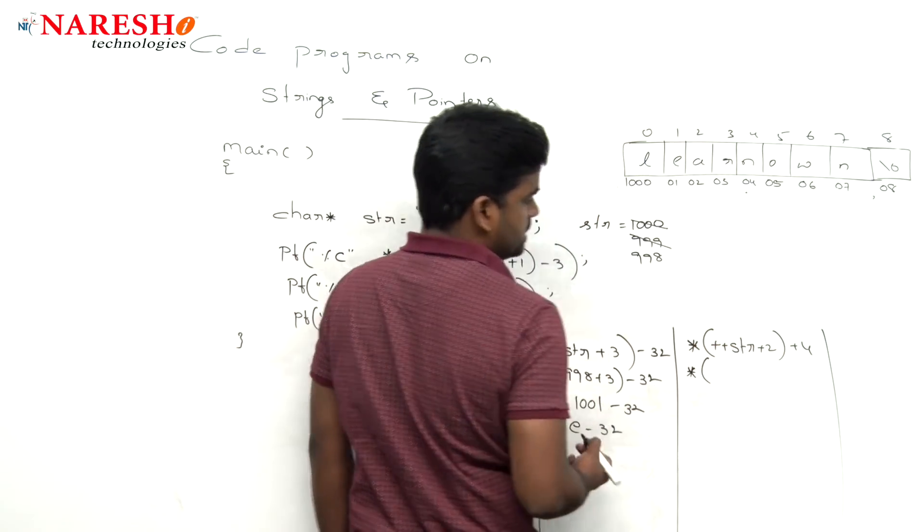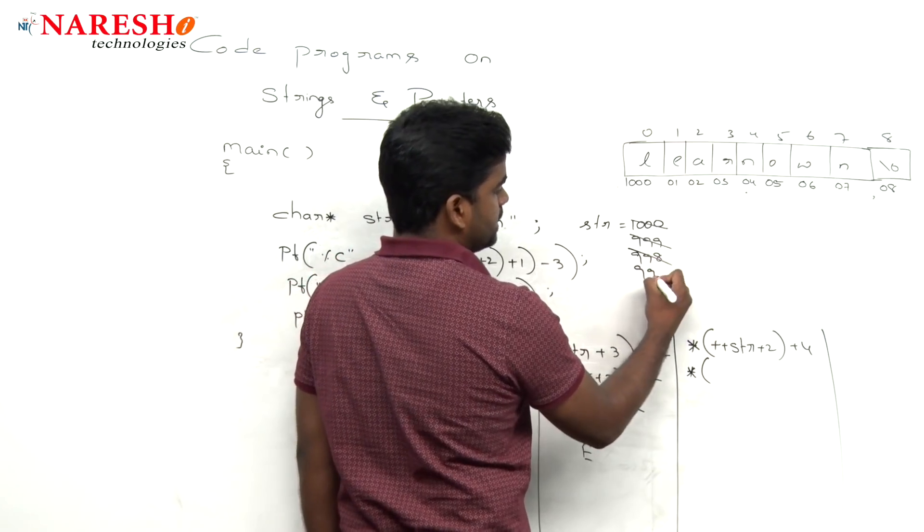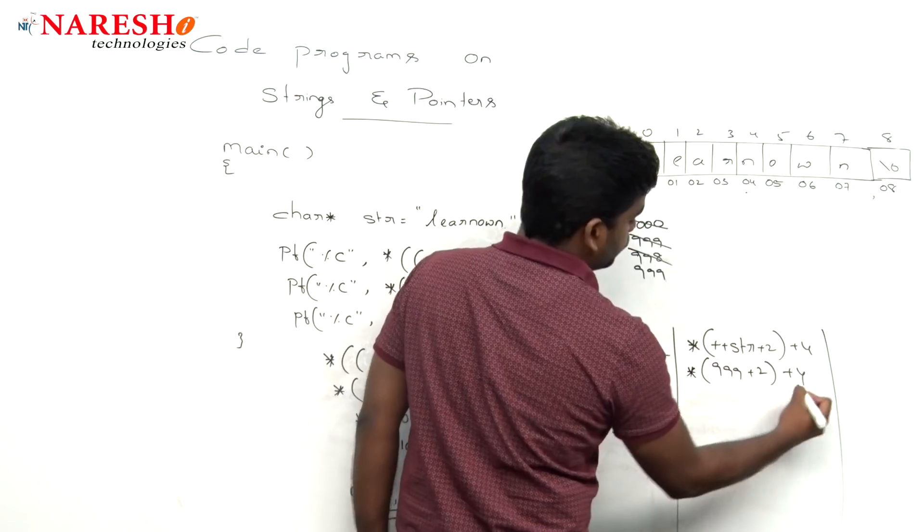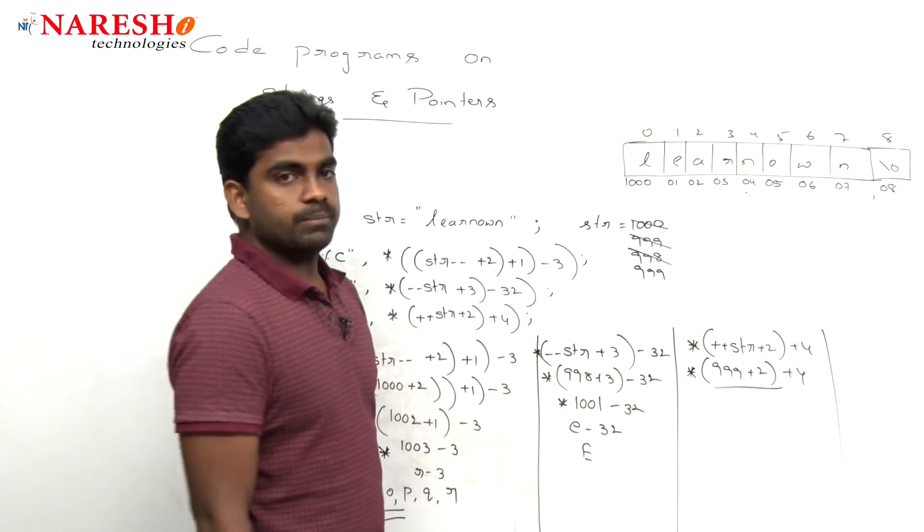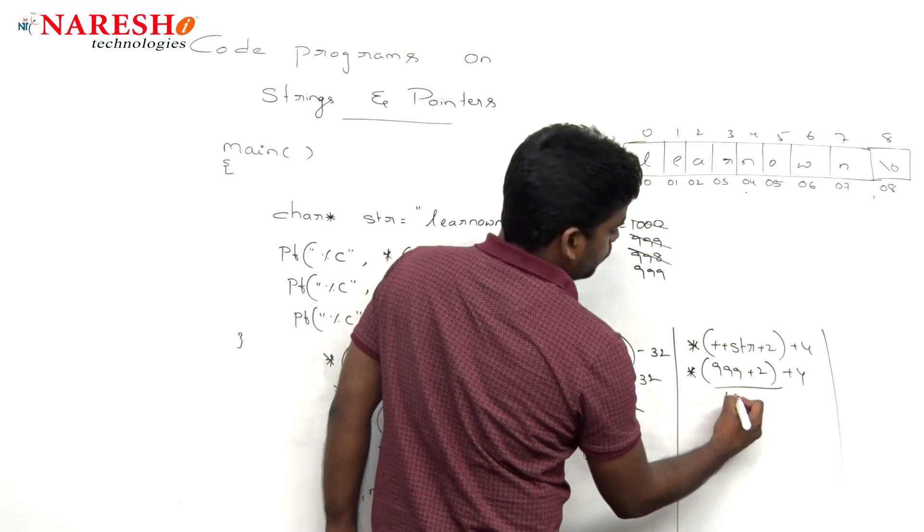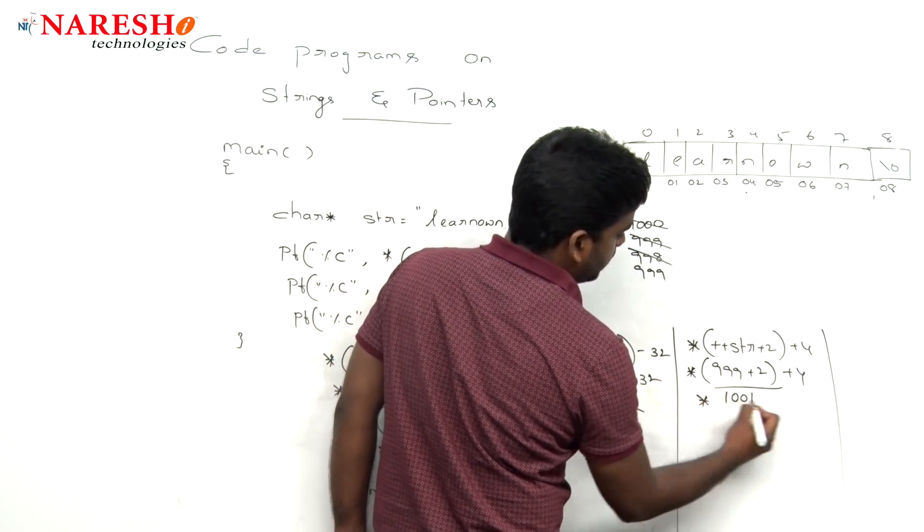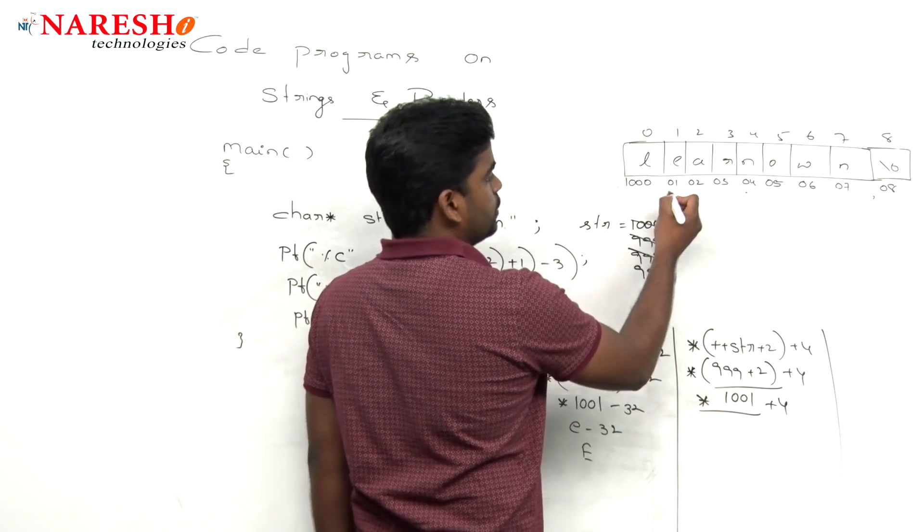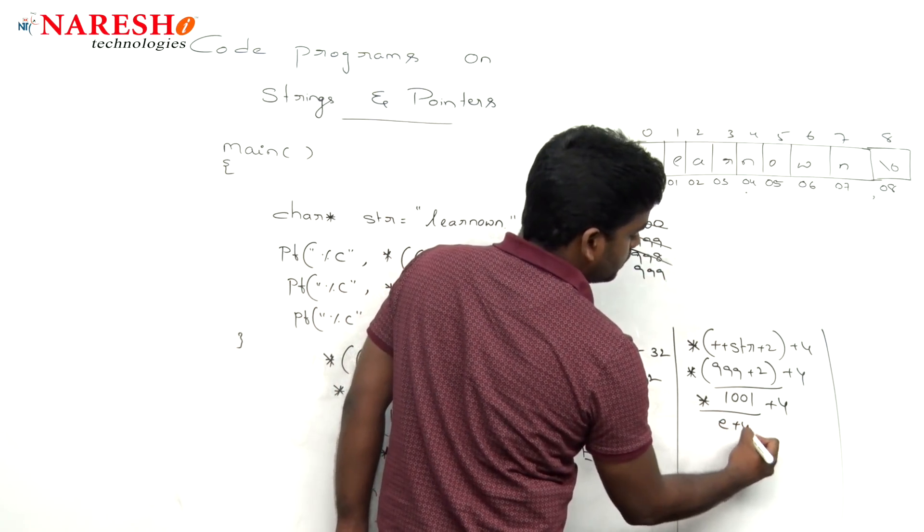And next come to that last one. Pointer plus plus str, increase the value by 1. 999 plus 2 plus 4. 999 plus 2, the value is 1001. 1001 pointer plus 4.